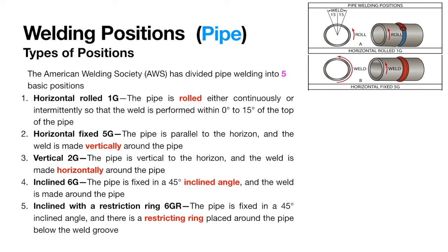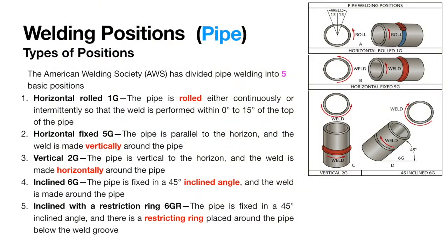Next we move to 2G. In vertical 2G, the pipe's axis is vertical and the axis of the weld is in a horizontal plane. The pipe is also not going to be rotated during the welding.